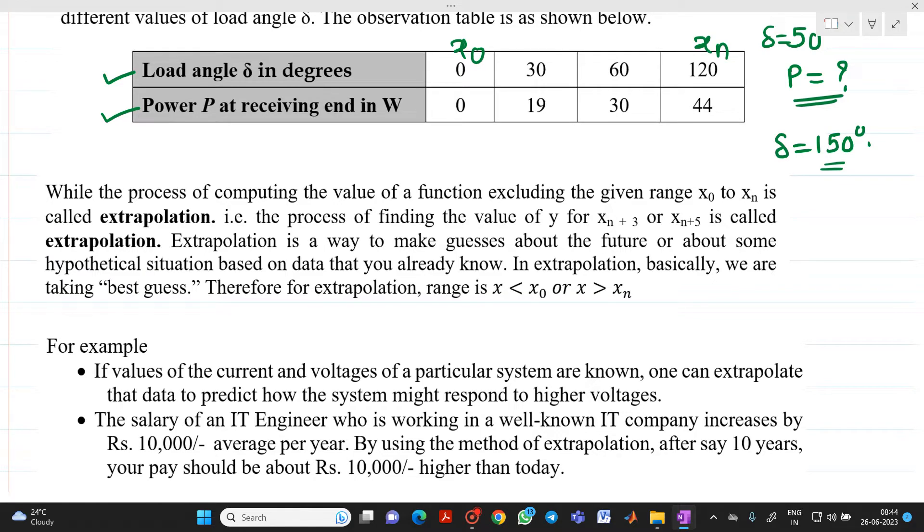It is a way to make guesses about the future or about some hypothetical situations based on the data that you already know. Therefore, the range has been x is less than x0 or x is greater than xn. For example, suppose values of current and voltages of a particular system are known. One can extrapolate that data to predict how the system might respond for the higher voltages. Or if the salary of an IT engineer who is working in a well-known IT company increases by Rs. 10,000 average per year, by using the method of extrapolation, after say at the end of 5th year or at the end of 10th year, your pay should be about Rs. 10,000 higher than today. We can do this calculation by using extrapolation.